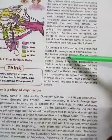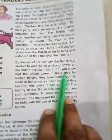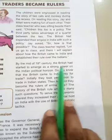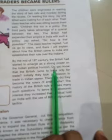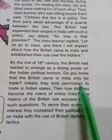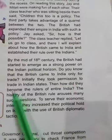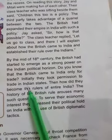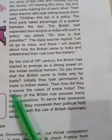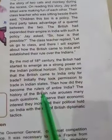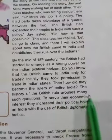By the middle of the 18th century, the British had started to emerge as a strong power on the Indian political horizon. Do you know that the British came to India only for trade? Initially, they took permission to trade in Indian states. Then how did they become the rulers of entire India?